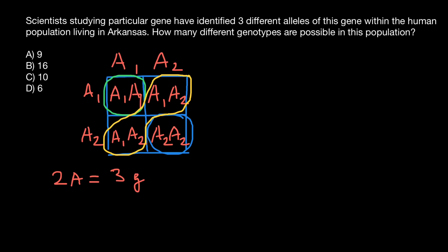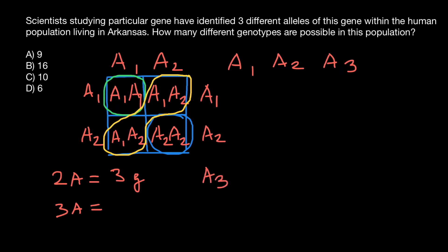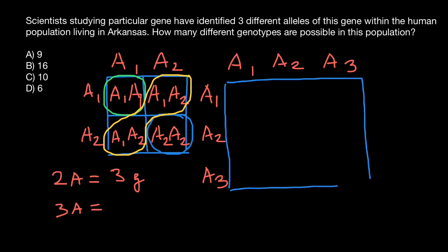Now let's take a look at what we get if we have three alleles. With three alleles, how many genotypes are we going to get? Let's say we have alleles A1, A2, and A3. Again, we build a simple Punnett square with A1, A2, and A3 along both axes. This time our Punnett square is going to be three by three, giving us nine cells.